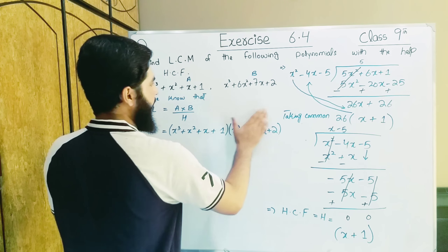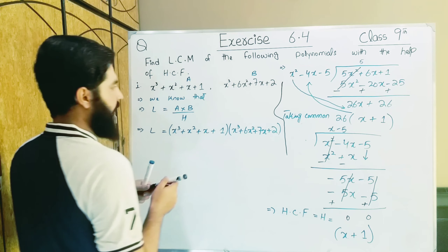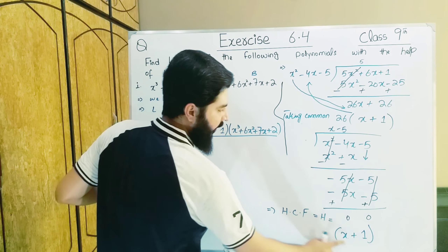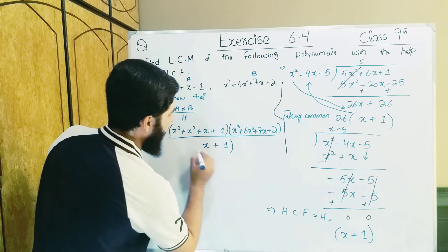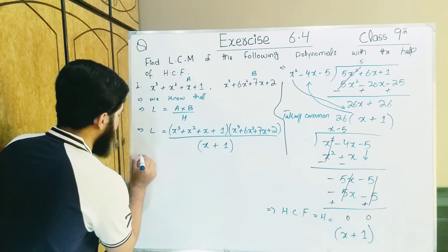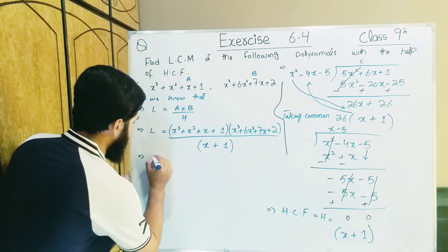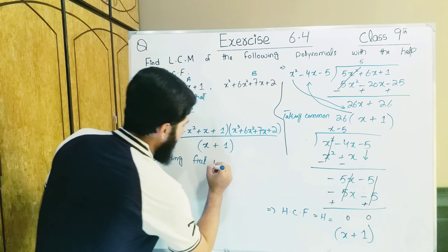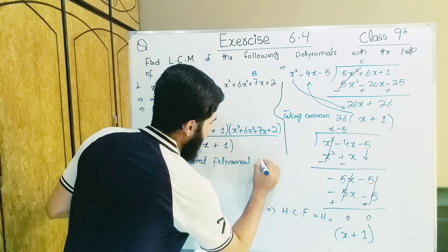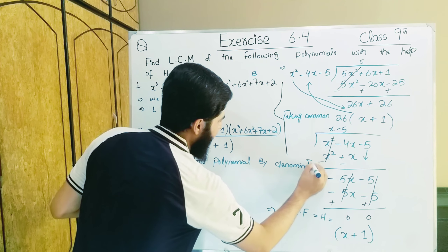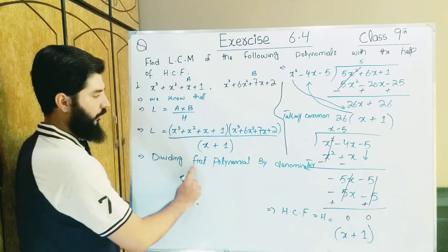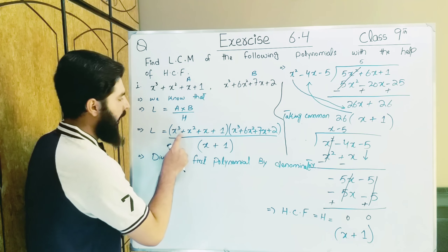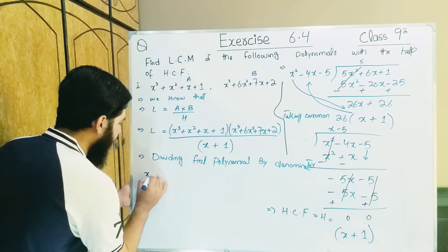B is the second polynomial: x⁶ + 6x² + 7x + 2. Now divide by H. H is HCF = x + 1. Dividing first polynomial by denominator — we divide the first polynomial by the HCF (denominator): x + 1 divides x³ + x² + x + 1.